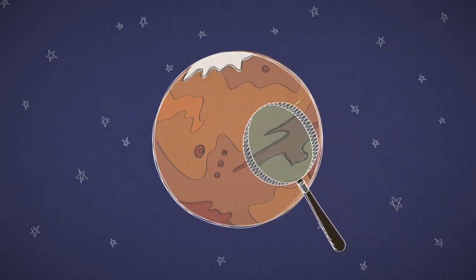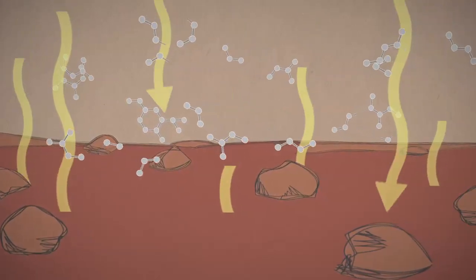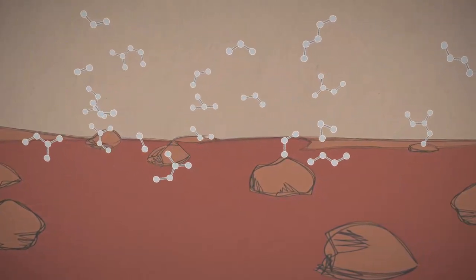But finding organics is hard. That's because organics easily break down when exposed to harsh things like extreme radiation and chemical oxidants that gave the Martian surface its rusty color.